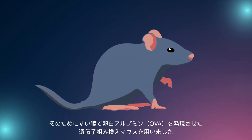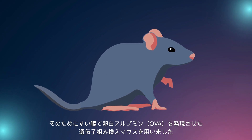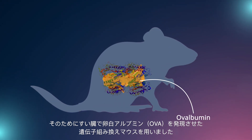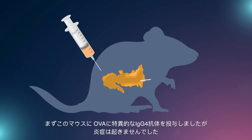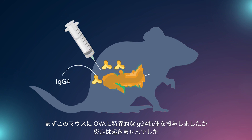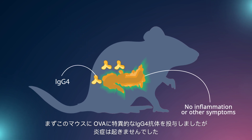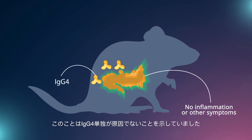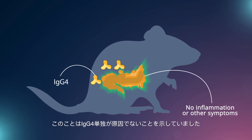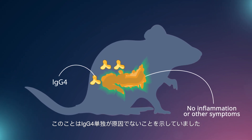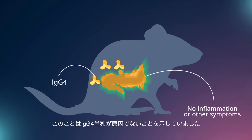For this, they selected recombinant mouse models that express ovalbumin in their pancreas. They first injected the mice with IgG4 specific to ovalbumin and found that no inflammation or other IgG4-RD-like symptom appeared, indicating that IgG4 alone was not the causative factor of IgG4-RD.